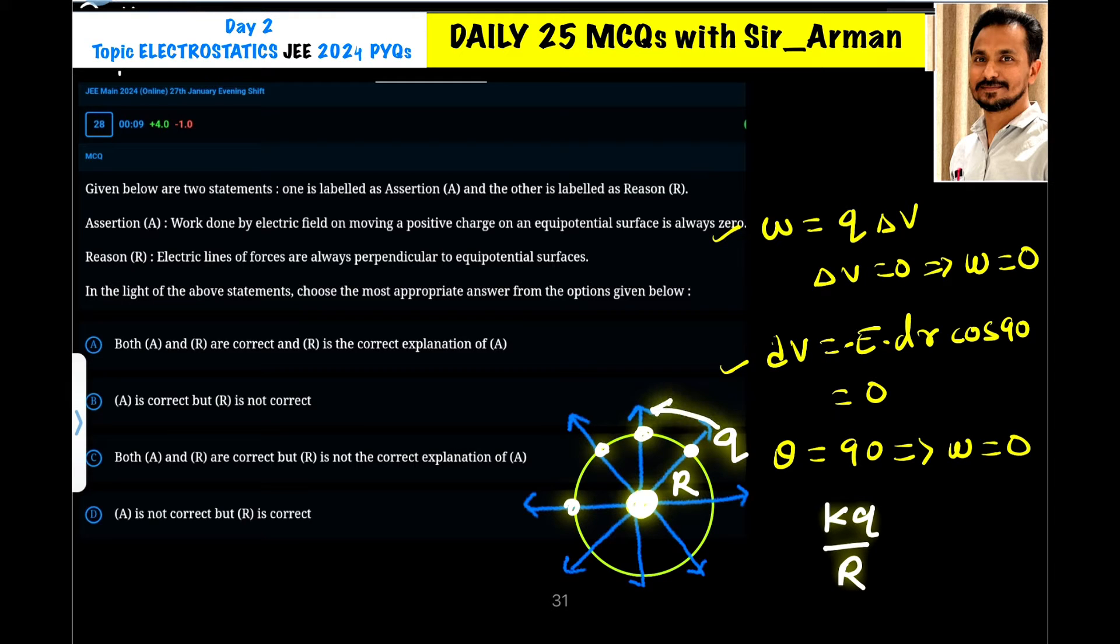If you move a charge from this point to this point, the work done will be zero because whatever the potential is here, the same potential is here and that we call equipotential surface.